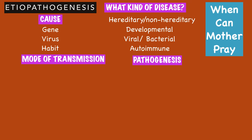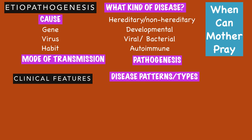The next heading is clinical features. The first thing to write is whether there are any disease patterns or types. For example, fibrous dysplasia has four disease patterns: craniofacial, monoostotic, polyostotic, and cherubism.